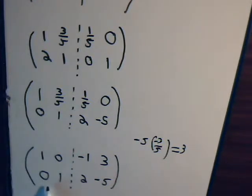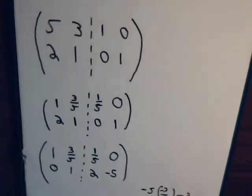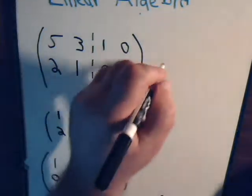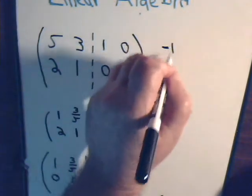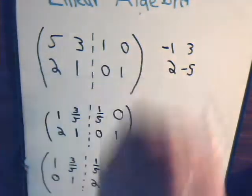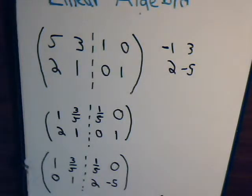Here we have the identity matrix, and this is the inverse of what we started with. What did we start with? This: 5, 3, 2, 1. And now we claim its inverse is minus 1, 3, 2, minus 5. So let's check that.